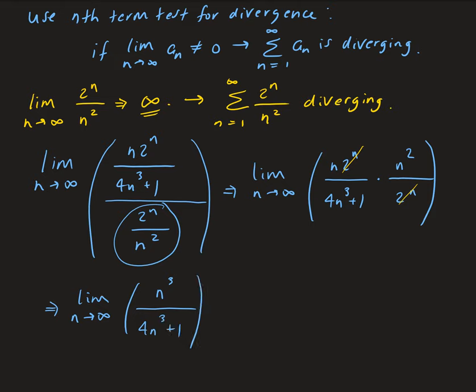So we have degree 3 on top, degree 3 on the bottom. So therefore, when we take the limit of this, that's going to leave us with 1 fourth.